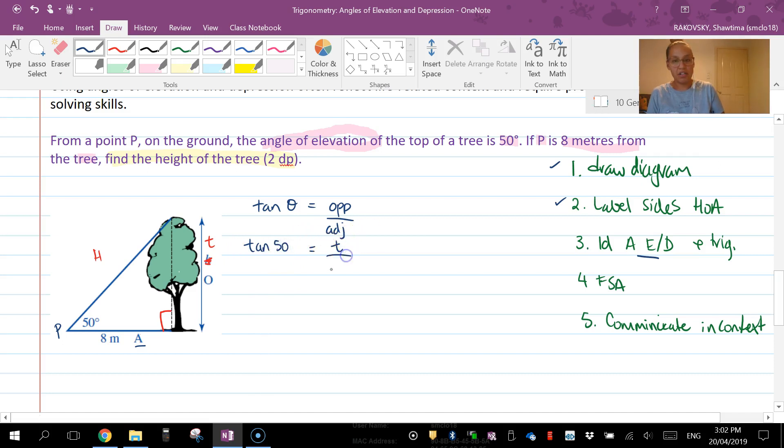Substitute, so tan 50, opposite is going to be T over adjacent which is 8. Use my... so the opposite of dividing by 8 is multiplying by 8, and therefore T equals 8 times tan 50.